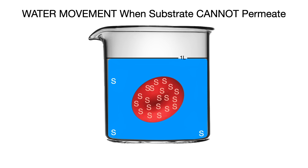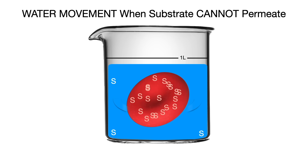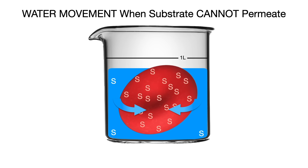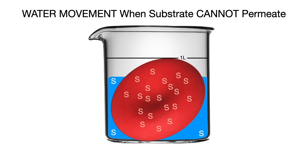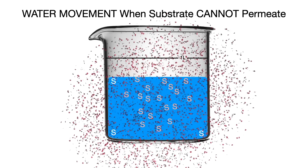But when solutes cannot permeate the cell membrane, solute can't equilibrate itself, so water will have to move toward the high solute concentration to help the cell reach isotonicity. Water movement will cause cell swelling or shrinking depending on whether the cell is hypertonic or hypotonic, respectively. In this case, since the cell was hypertonic, the cell will swell and may even burst.